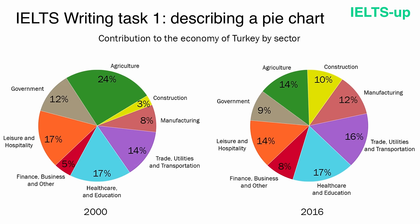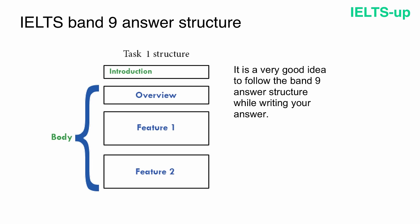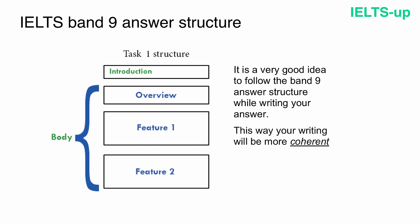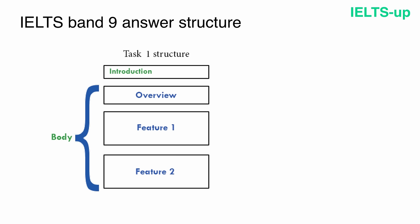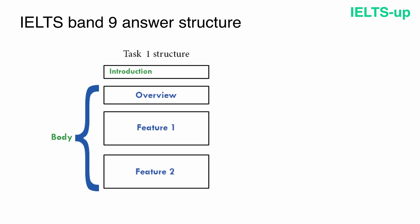Now that we're familiar with the pie charts, we can start writing the answer. It is a very good idea to follow the band 9 answer structure. This will make your writing more coherent and clear for the examiner. The first paragraph is an introduction, where you should introduce your chart to the readers in one or two sentences.